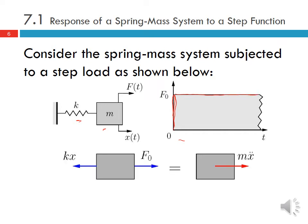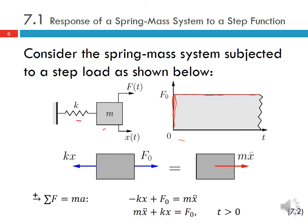Here's our free body diagram and mass-acceleration diagram. We use Newton's laws to derive the equation of motion: mx double dot plus kx equals F. This applies for all t greater than zero.